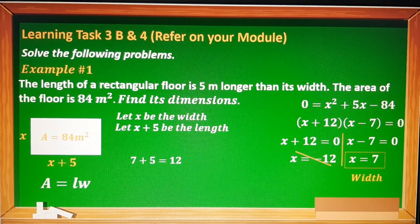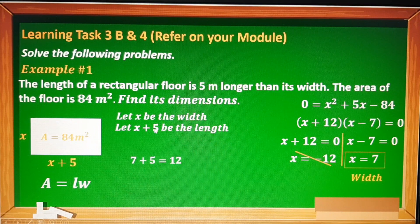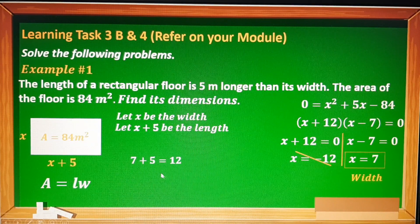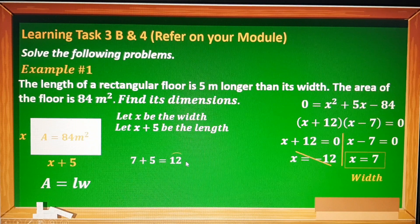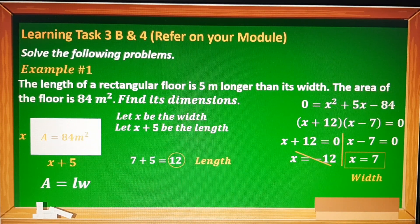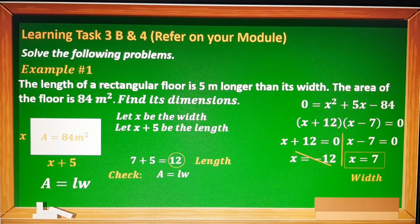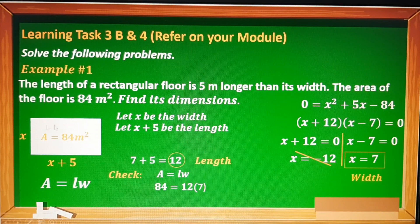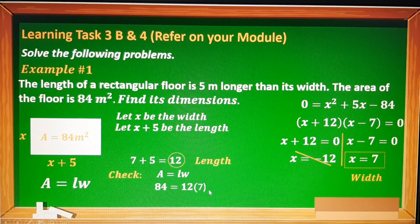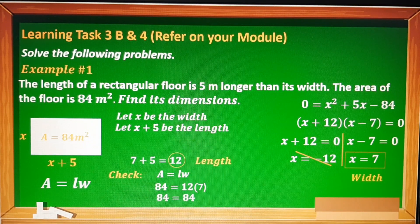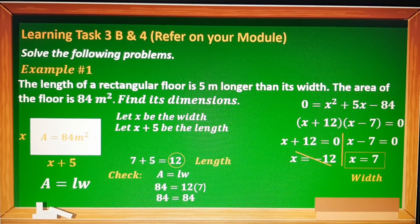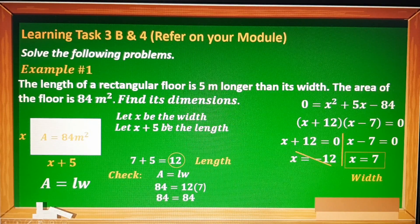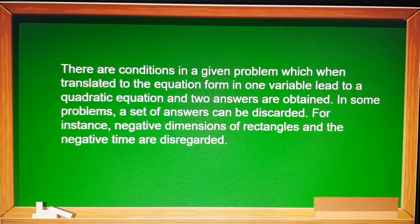Ang length natin ay 12, kasi according dun sa representation natin dito sa taas, ang length natin is x + 5. So papalitan lang natin yung value ng x na 7, so 7 + 5 = 12. So 12 ang ating length. To check, from the formula area equals length times width, ang area natin ay 84. Ang length na nakuha natin ay 12 and ang width natin ay 7. So 12 times 7 equals 84. So the length of the rectangle is 12 meters and its width is 7 meters. Yun po yung dimension ng rectangular floor natin.